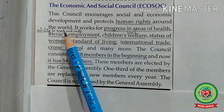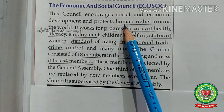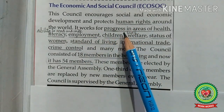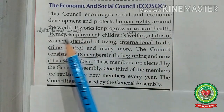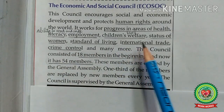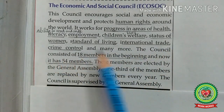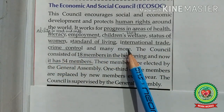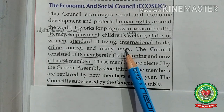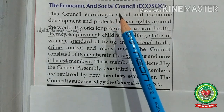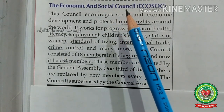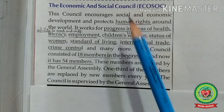Human rights means the basic rights of everyone to be treated fairly. The council works for progress in areas of health, literacy, employment, children's welfare, status of women, standard of living, international trade, crime control, and many more. The different agencies of the United Nations work under the Economic and Social Council for progress in these various fields.